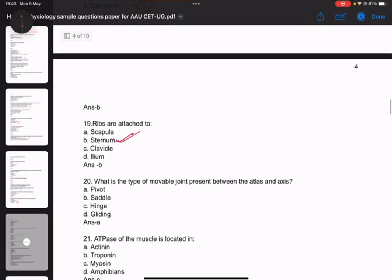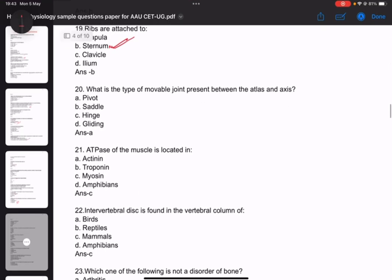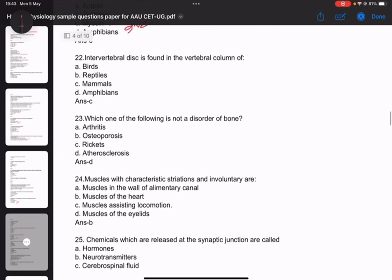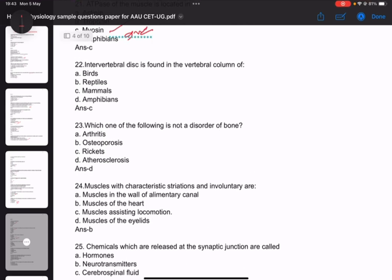Question nineteen: Ribs are attached to sternum. Question twenty: What is the type of movable joint present between atlas and axis vertebrae. Question twenty-one: The muscles located at - answer is interventricular septum. Question twenty-two: Which of the following is not a disorder of bone.